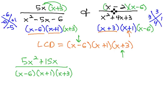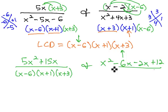putting the numerator in parentheses and foiling this out. x times x is x squared minus 6x minus 2x plus 12 over our common denominator of x minus 6, x plus 1, x plus 3.